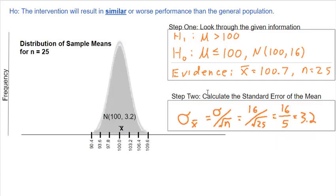Step two: calculate the standard error of the mean. The standard error equals standard deviation divided by the square root of the sample size. Our standard deviation is 16 and our sample size is 25. So 16 over the square root of 25 equals 16 over 5, or 3.2.